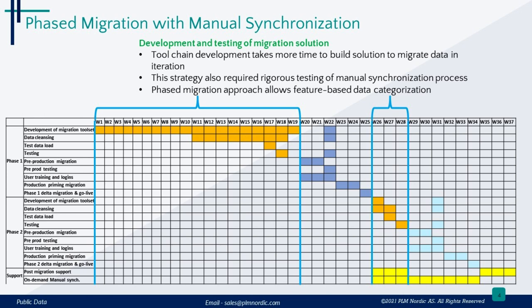During the development and testing stage, we focus on three key aspects. First, building the tool chain, which might take extra time for iterative data migration. Second, rigorous testing is needed for the manual synchronization process. Lastly, in the phased migration approach, we categorize data by features to take care of complex data in the last phase.